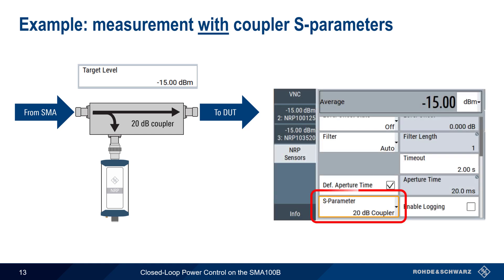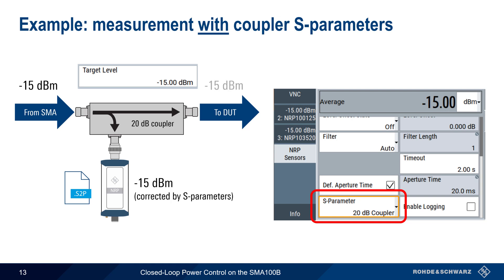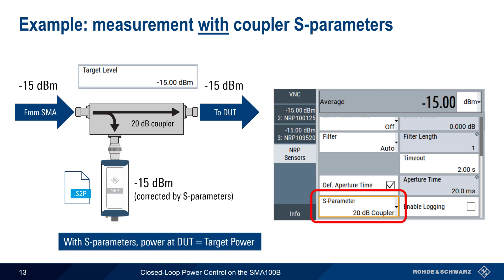On the other hand, if we do select an S-parameter file for the coupler and enable it under sensor configuration, the SMA will adjust output power to minus 15 dBm, because the sensor provides a corrected reading of minus 15 dBm at this output power level. The DUT input power in this case would also be minus 15 dBm, which is the same as our user-configured target power. If we were to add gain or loss between the SMA and the coupler, the SMA would automatically adjust output power so that the power seen at the DUT input would still remain a constant minus 15 dBm. Using S-parameters greatly simplifies the configuration of closed-loop power control since it makes the power at the DUT the same as the user-configured target power.